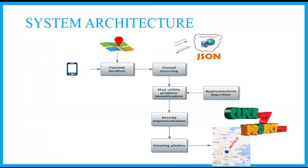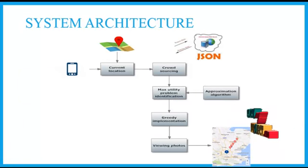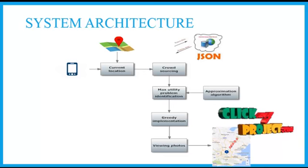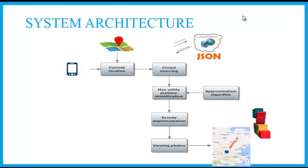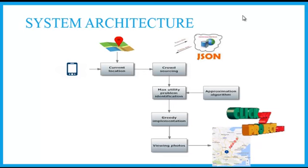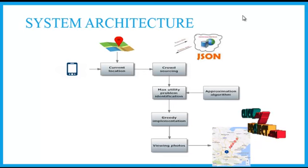Let us see the system architecture of our project. First, in our mobile device, we have to identify our current location. The current location is identified by using Google Maps. For that, we have to call the Google Play Service Library.